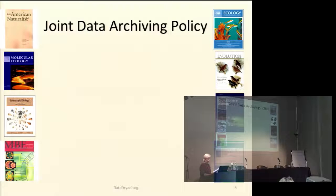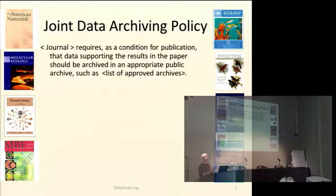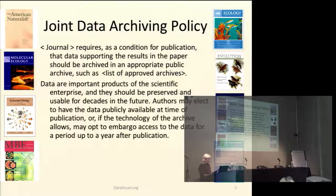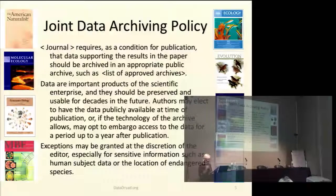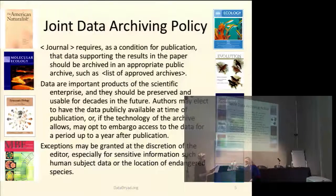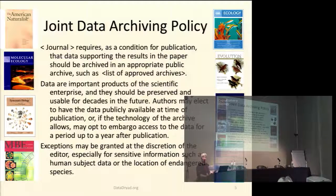The Joint Data Archiving Policy emerged along with Dryad around 2009 from discussions among journal editors primarily in ecology and evolutionary biology, who were acutely aware of data being lost as articles were published without the underlying data being saved. They wrote this policy in 2009 and coordinated its adoption in 2010 and 2011. Many journals have signed on and continue to do so. We want to support replicable science — the data supporting all the results in the paper. We allow for embargoes and exceptions for sensitive data, and this policy can serve as a model for other disciplines.